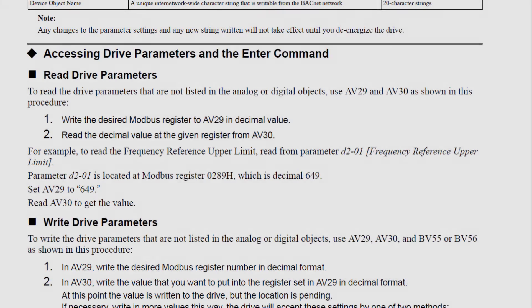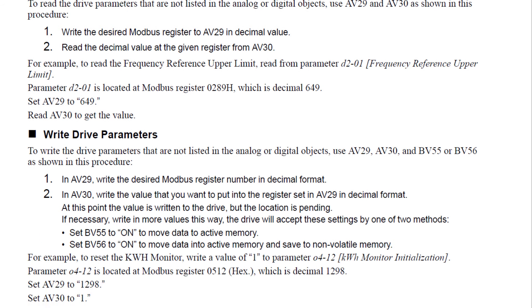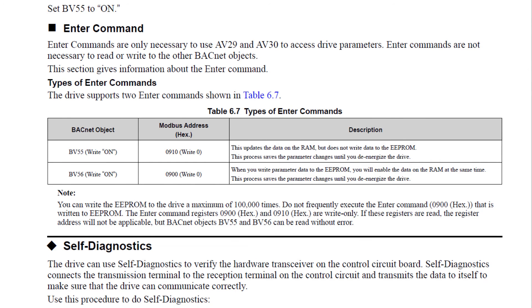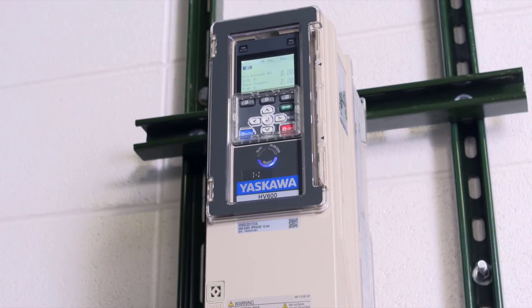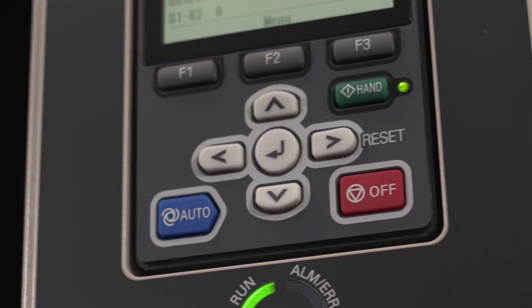If you are interested in accessing drive parameters that are not listed in the standard object groups, you can use AV29, AV30, and BV55 to read and write drive parameters. The knowledge learned here will give you a firm grasp on BACnet when applied to Yaskawa products.